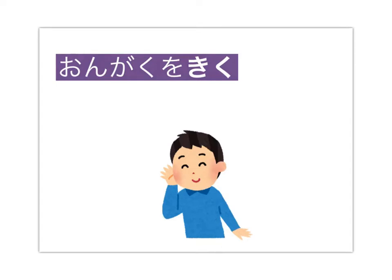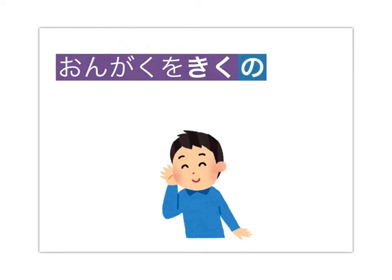Here we have the short phrase ongaku wo kiku — a complete sentence in Japanese, at least informally — which means 'to listen to music.' To a short phrase like this, ongaku wo kiku, we'll simply add the particle no afterwards. This has the effect of taking this verb phrase, ongaku wo kiku, into a noun phrase — changing it from 'to listen to music' into 'listening to music,' an activity.